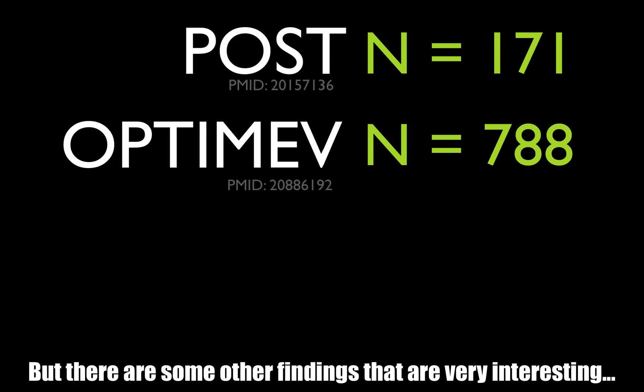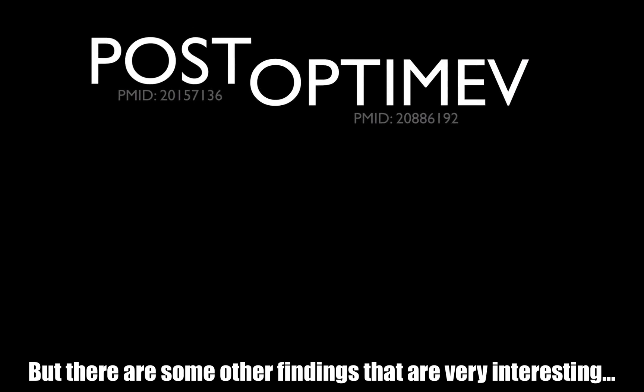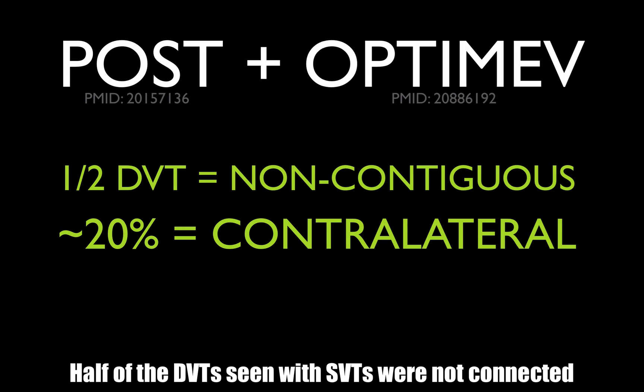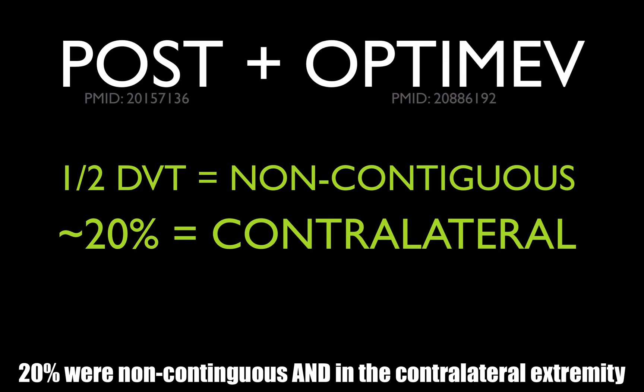They reported another interesting fact: about half of those DVTs were actually non-contiguous, meaning they might have a clot in the greater saphenous that was isolated, and then the femoral vein or popliteal vein had the DVT — not necessarily communicating. And 20% of the time they were actually contralateral DVTs.